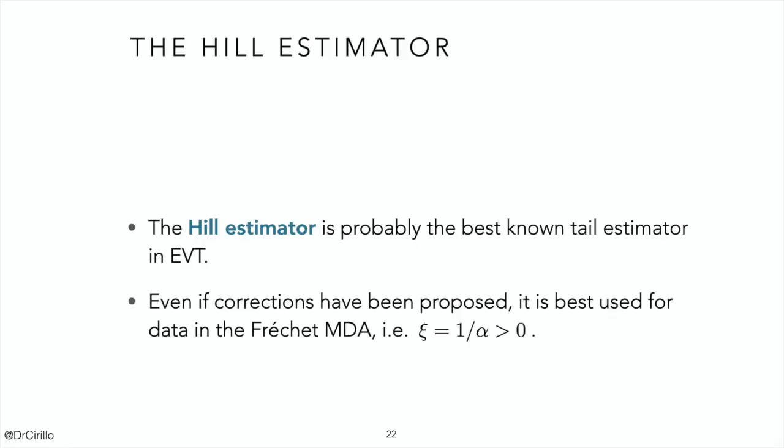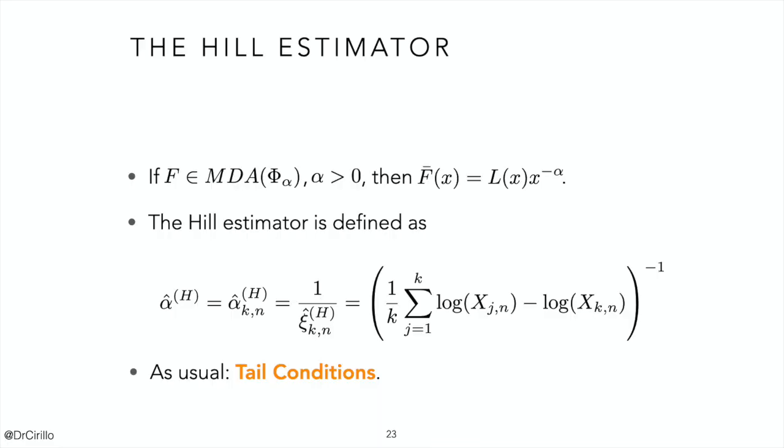When working with both the GEV and the GPD, a very important tool that we can use to get a grasp of the tail — to understand what K is, what threshold to use, and how many order statistics to consider — is the so-called Hill plot, which is based on the Hill estimator of the tail parameter Xi. The Hill estimator is particularly useful for fat tails, specifically for tails that are regularly varying. The Hill estimator is defined using the order statistics, as you see on your screen.